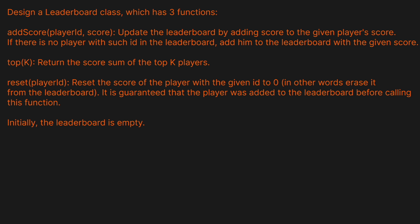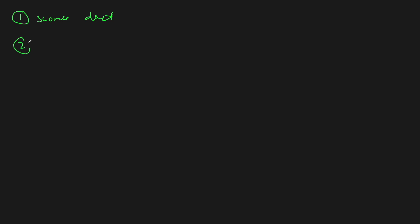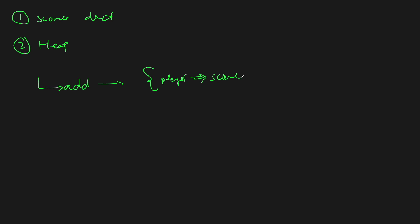Now it's time to actually solve it. We're going to use two data structures. The first is going to be a dictionary — we'll call this the scores dictionary. The second one is going to be a heap. Whenever you hear top K, you want to be thinking heap. For add score, it's really simple — we just put into the dictionary for that player ID and add their score. We can do this in constant time.